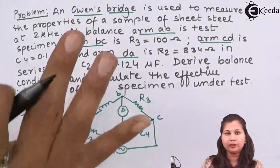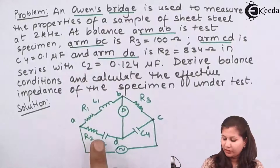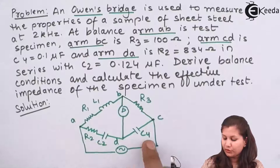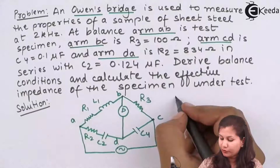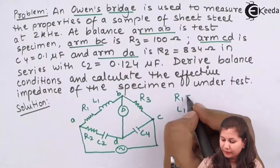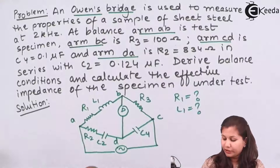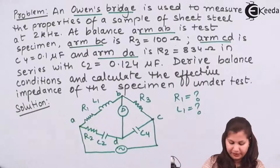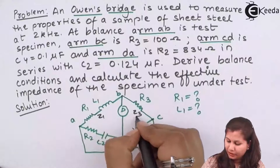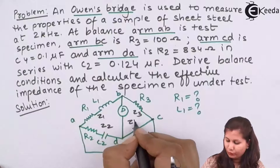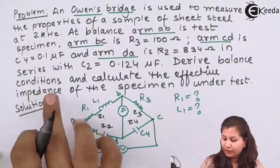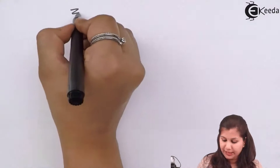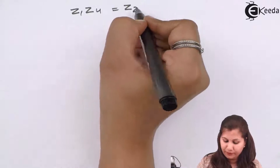This is the circuit for the bridge. We are given the values of R2, C2, C4, and R3, and we have to find out the values of R1 and L1. Now let us write the impedances in the various arms: Z1, Z3, Z2, and Z4. We have to derive the balance condition. At balance, the general balance equation for an AC bridge is Z1·Z4 = Z2·Z3.